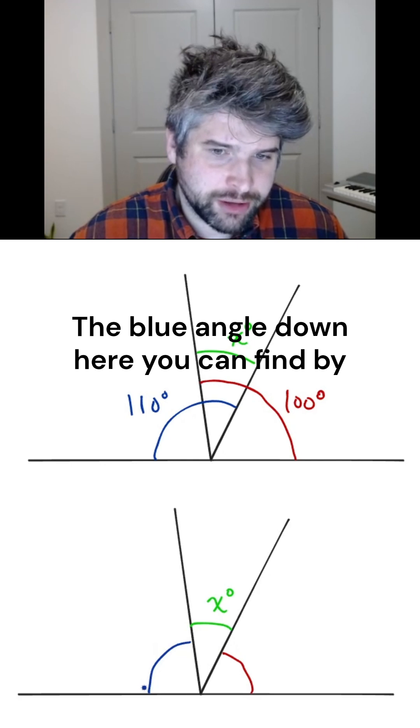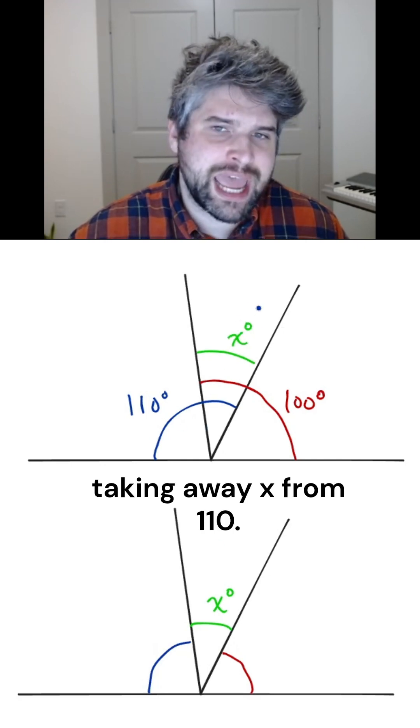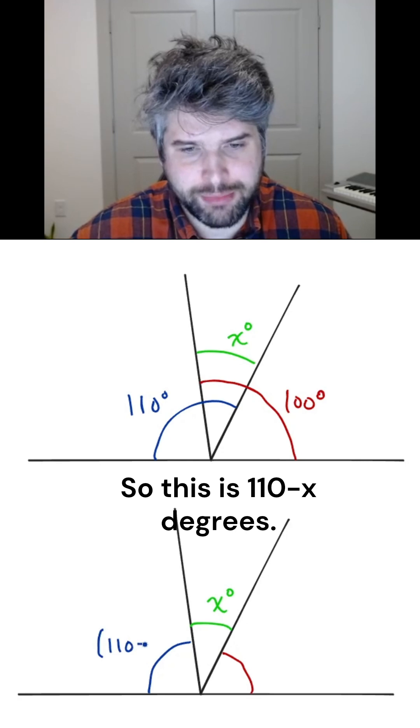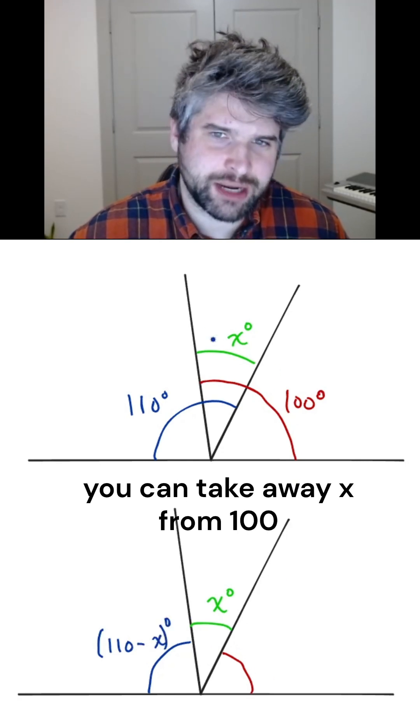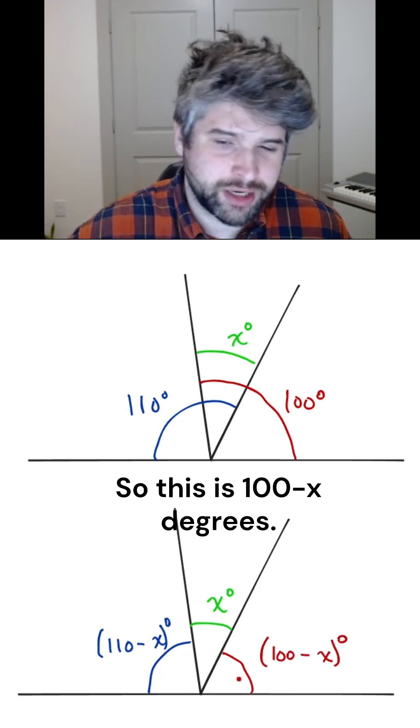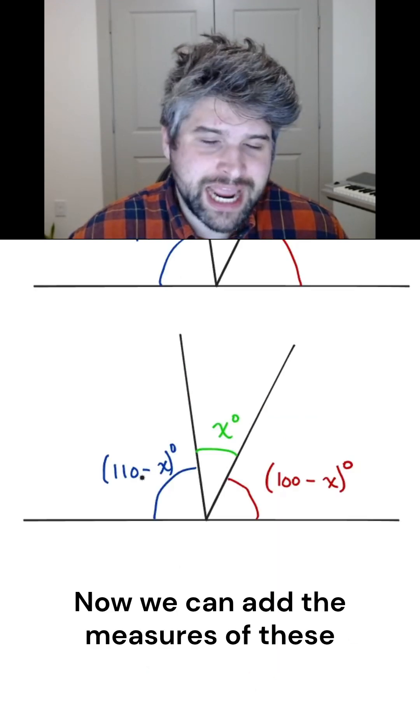The blue angle down here you can find by taking away x from 110. So this is 110 minus x degrees. Similarly, for the red angle, you can take away x from 100. So this is 100 minus x degrees.